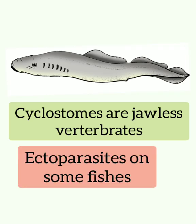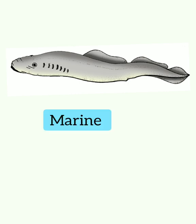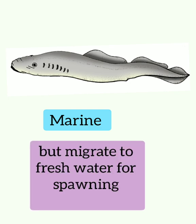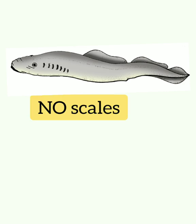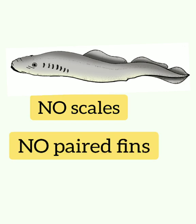All cyclostomes are ectoparasites on some fishes. They are marine but migrate to freshwater for spawning, i.e., for reproduction. Cyclostomes die within a few days after spawning.